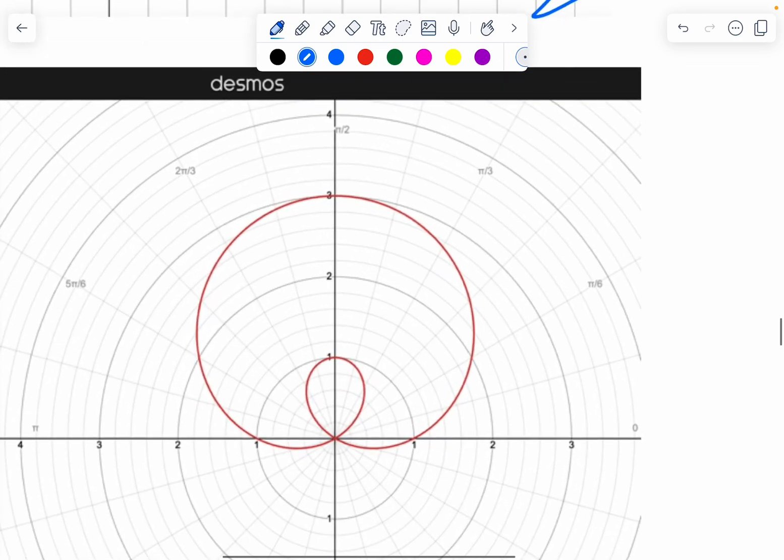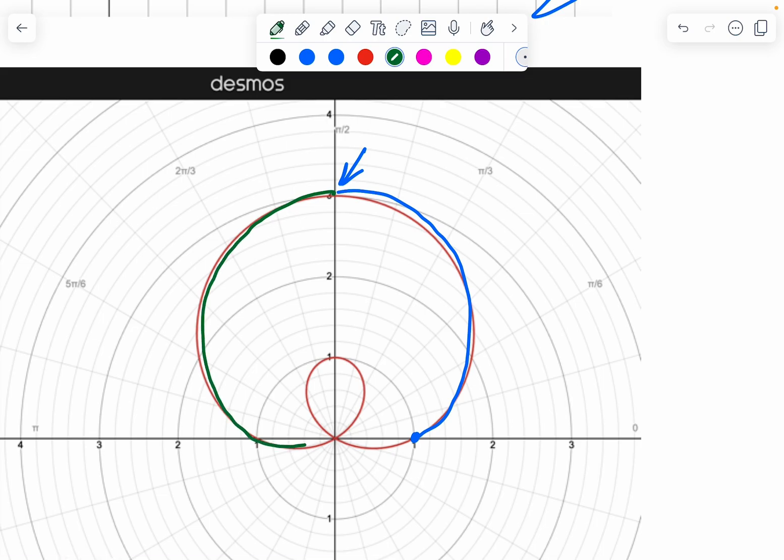And so when we look here, our curve, we started at, remember this was 0. We started, we're increasing, we're getting farther and farther away. And then at this point, so we increased to here, from here, as we continue, let's use a different color. As we continue, we are decreasing, decreasing. We're getting closer and closer and closer to the origin.